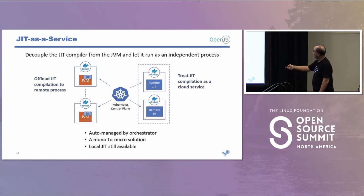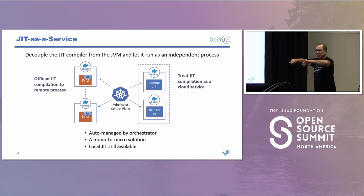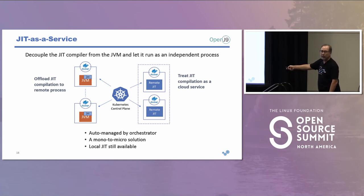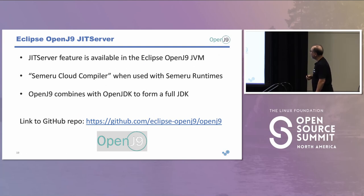We want to offload JIT compilations to remote services — remote JITs that we can access remotely — managed just like any other microservice by your orchestrator, Kubernetes. It's basically the classic monolith-to-micro solution: in this case the monolith is a JVM, and we're splitting it into a JIT service and the remaining runtime. Importantly, the local JIT is still available in the JVM, so if the remote service goes down the JVM can still function.